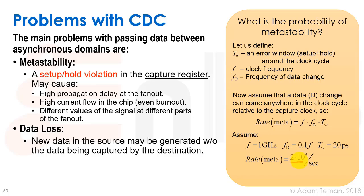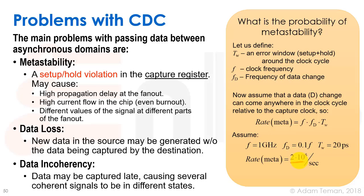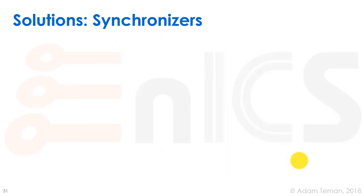Metastability is not the only problem. Two additional issues are data loss — where new data in the source domain may be generated without being captured at the destination due to unsynchronized frequencies — and data incoherence, where data may be captured late, causing several coherent signals to be in different states and leaving state machines totally unsynchronized.